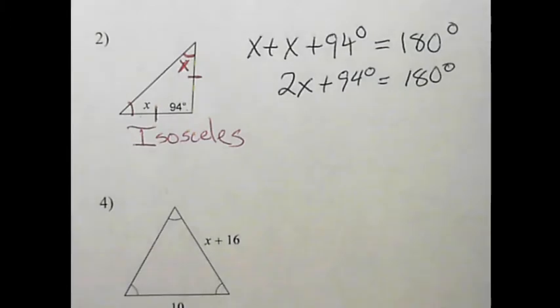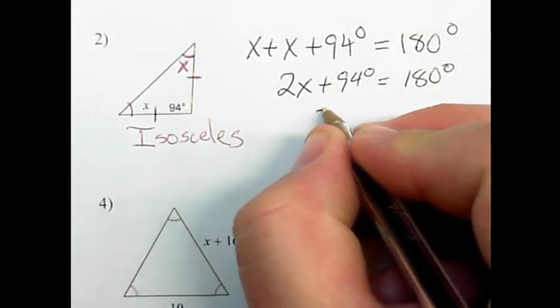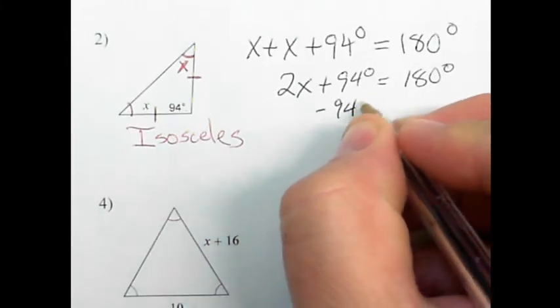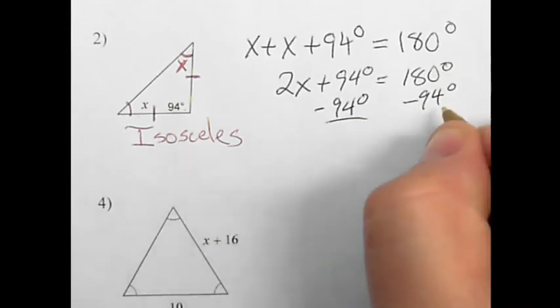Now the next step is to solve for x. I can move the 94 or the 2. Moving the 94 is easier, so I'm going to subtract 94 from both sides.